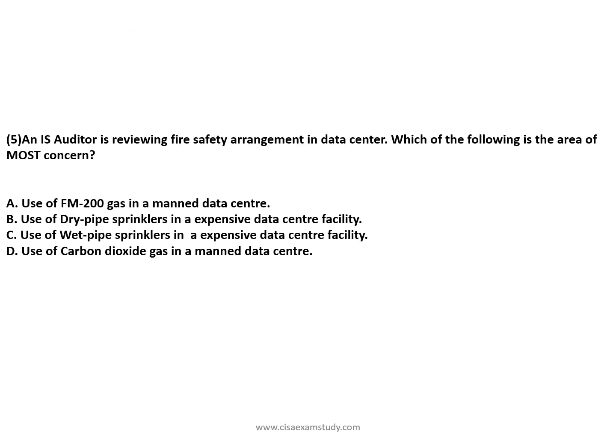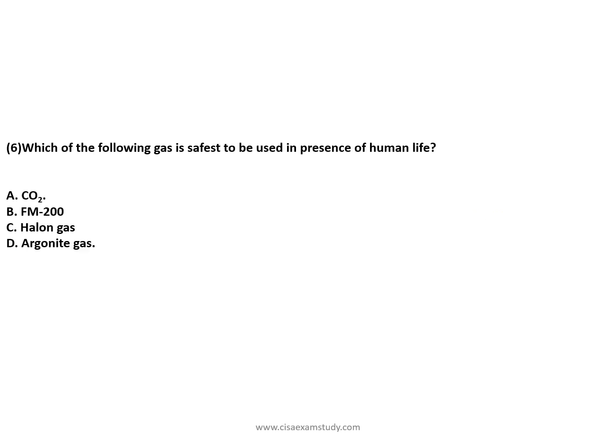An IS auditor is reviewing fire safety arrangements in a data center — the area of most concern is the use of CO2, as it is not safe for human life, whereas other agents are safe for human life. When asked which of the following is safe to be used in the presence of human life, the answer is FM-200.